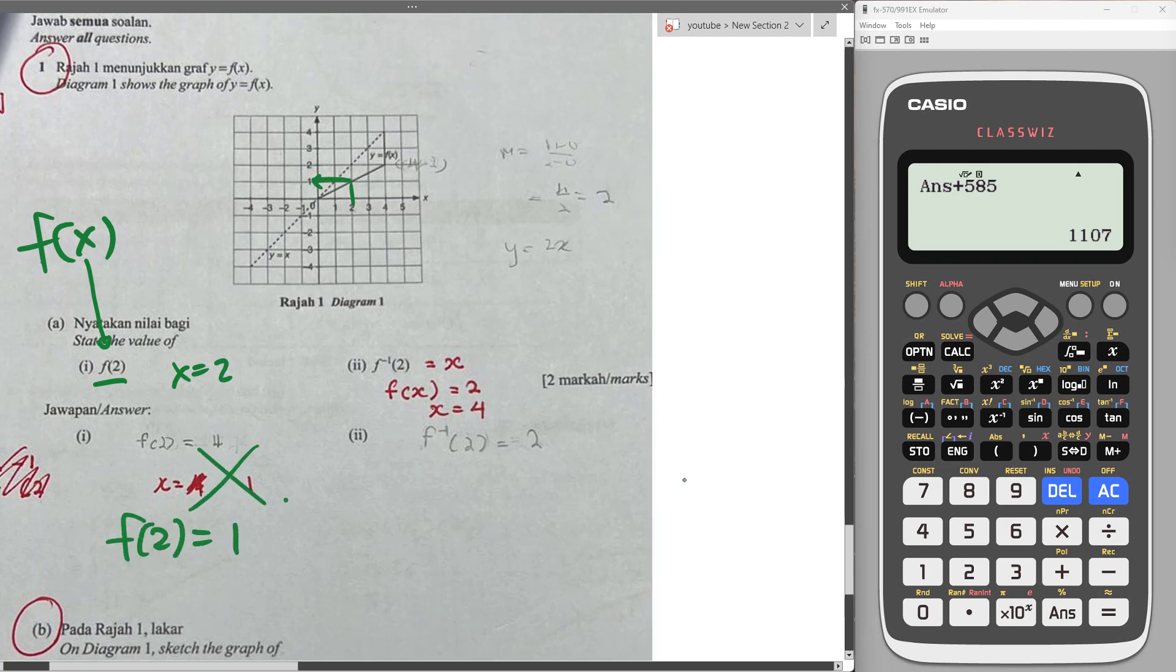So therefore, this one I believe is just 1 mark. So f(2) is equal to 1. You cannot say x is equal to 1, which is wrong, because x is equal to 2. So f(2) is equal to 1.